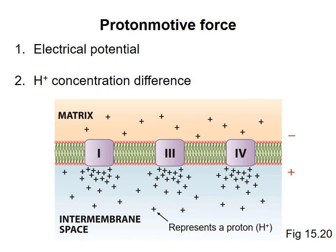This force is made up of two components. The first is the electrical potential across the membrane. The accumulation of positive charges in the intermembrane space makes that side of the membrane positively charged relative to the matrix side, which has a relatively negative charge. This means that, given the opportunity, positively charged protons would spontaneously move from the intermembrane space side of the membrane to the matrix side, because they are repelled by the positive charge and attracted to the negative charge.